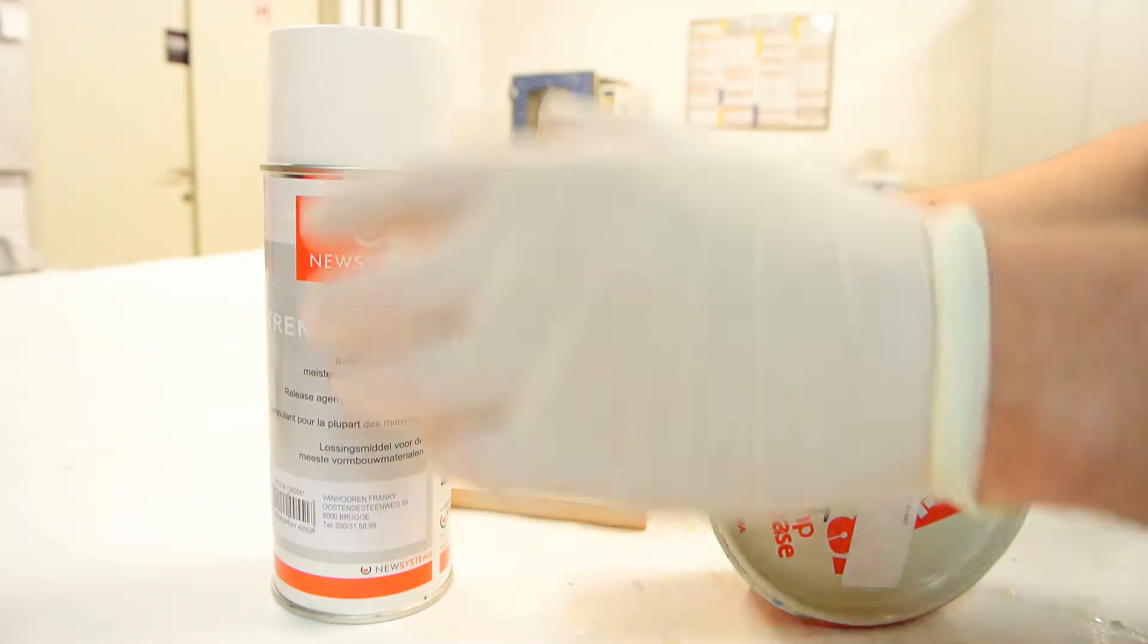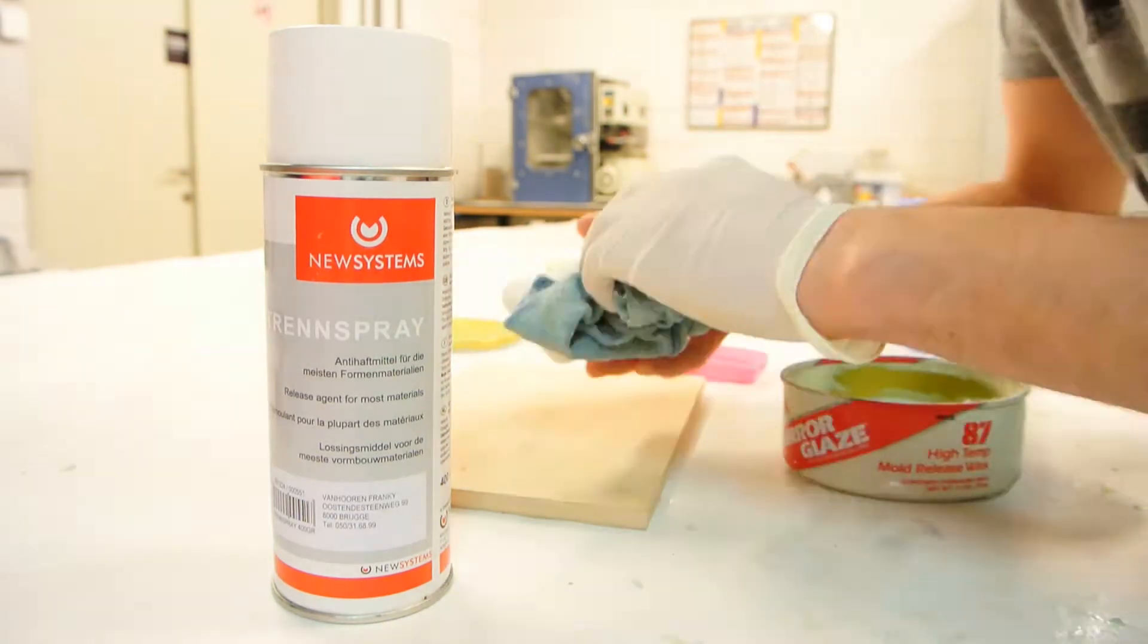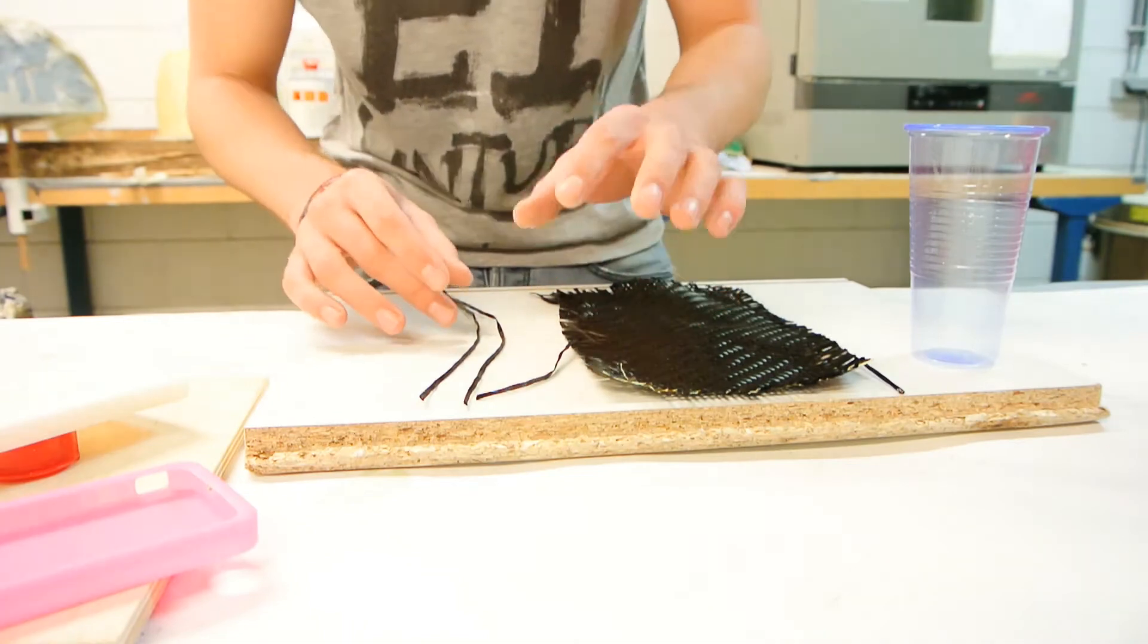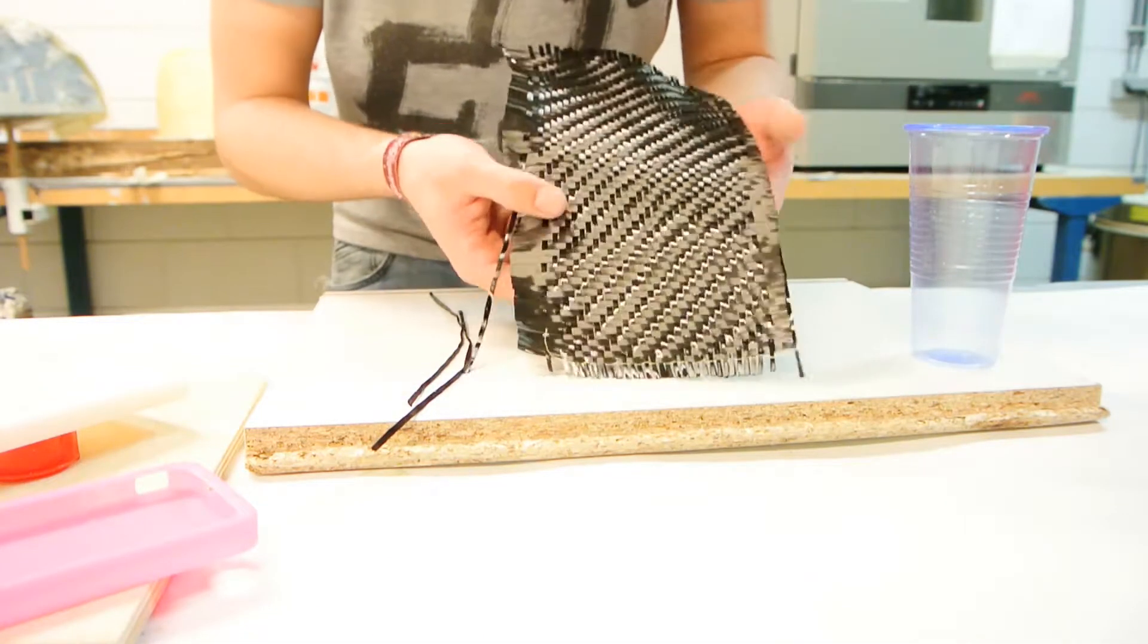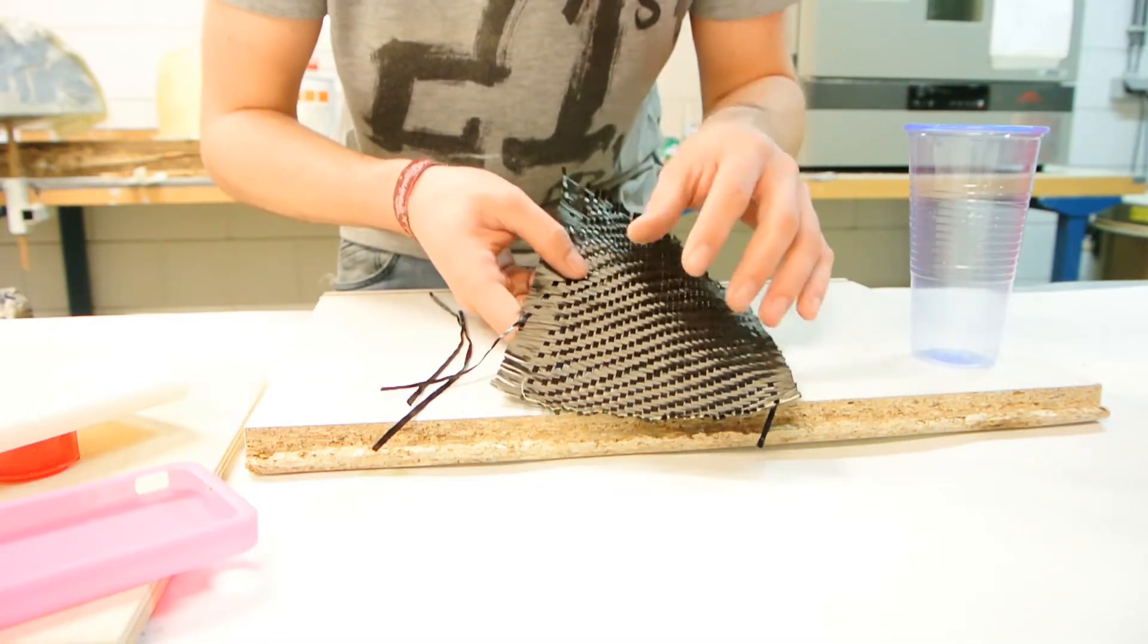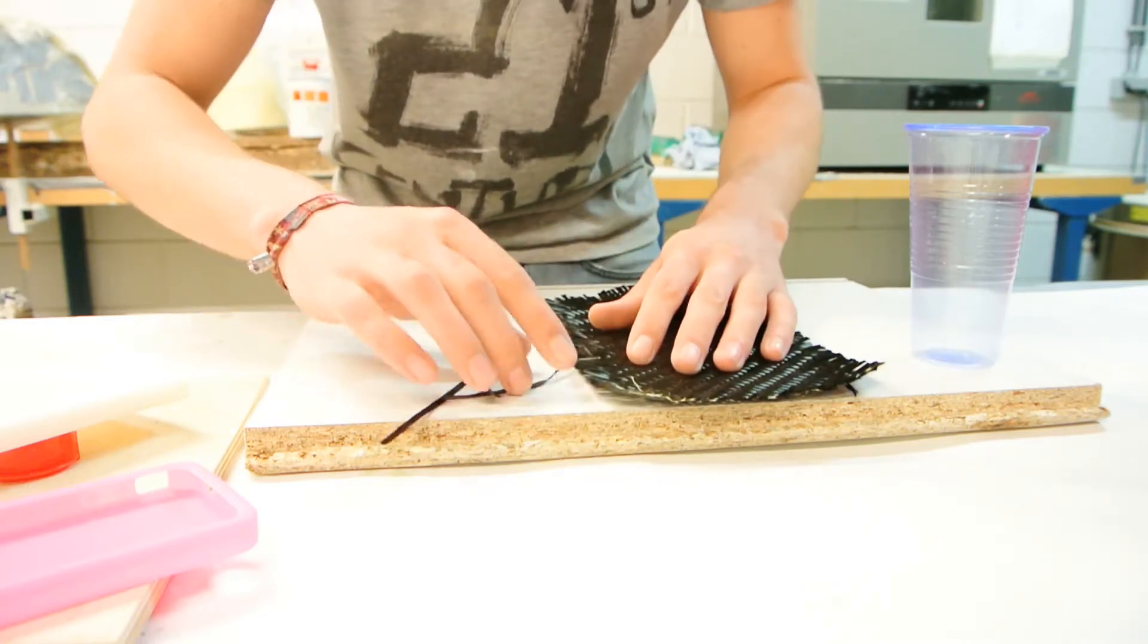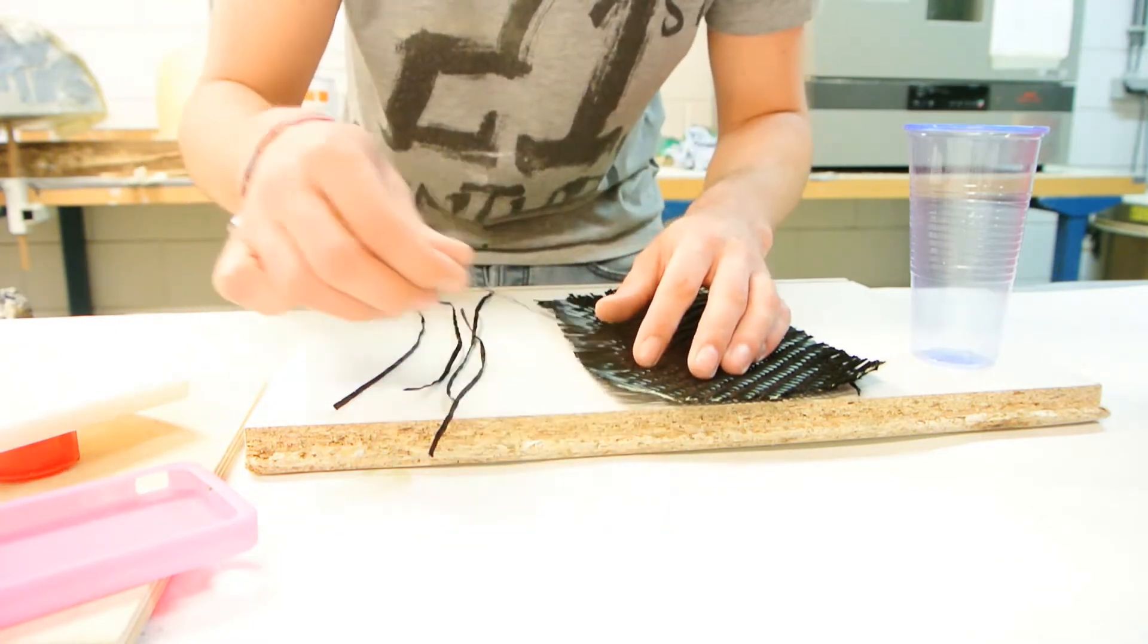Okay, so this is the carbon fiber I'm going to use. This is 600 grams per square meter of a twill weave. So I'm going to use this, just remove some strands until I get enough of them.